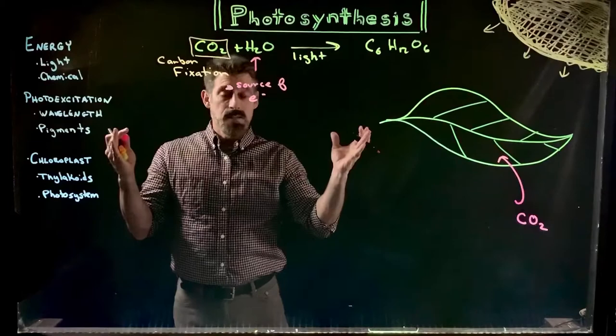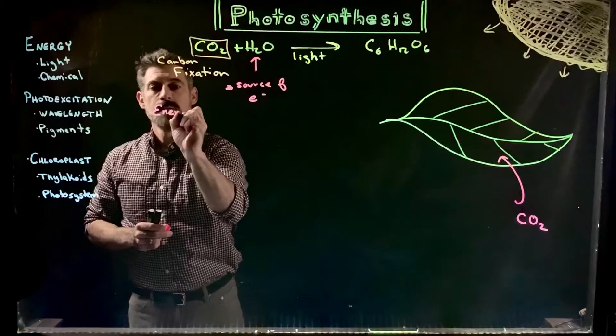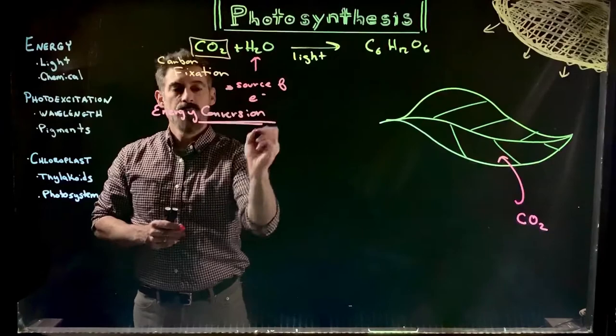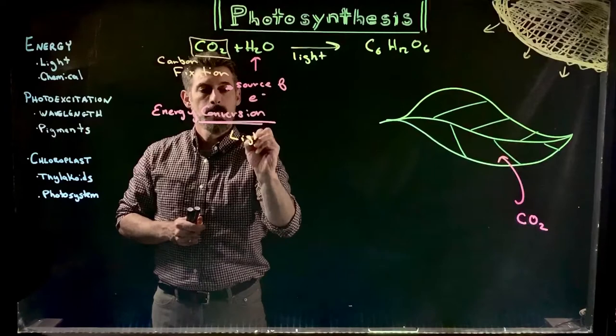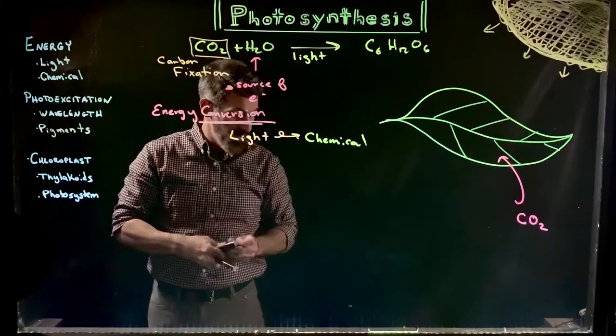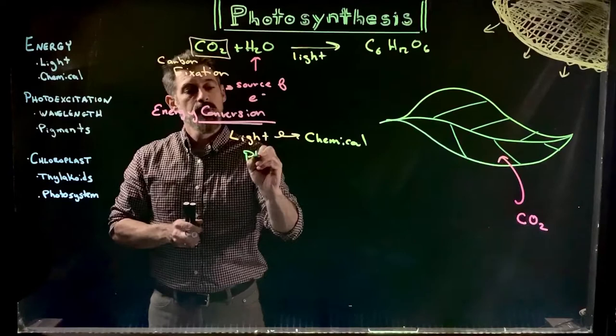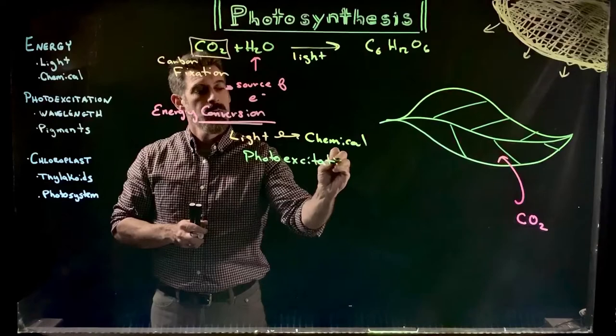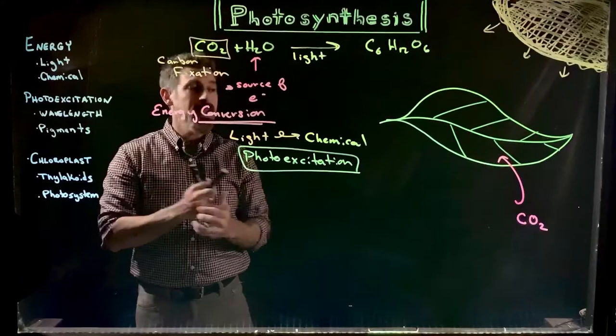Now what is this process of photosynthesis? Well, it's an energy conversion process really. So it's conversion of light energy really into chemical energy. How are we going to do that, or how are plants going to do that? It's through a process called photo excitation. That's the start of it, and that's really the main harnessing process.